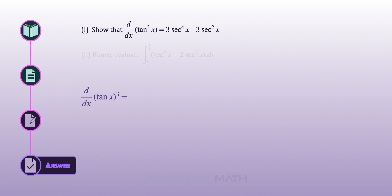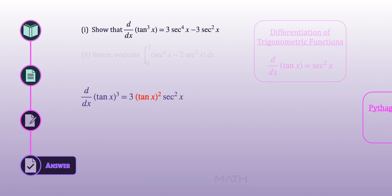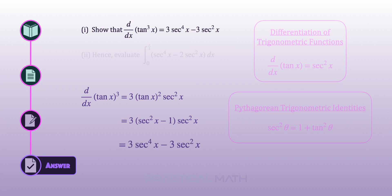To differentiate tangent cubed of x, we apply the chain rule: bring down the power outside the bracket, power minus 1, giving 3 times tangent squared of x, followed by the differentiation of tangent of x. By the differentiation of trigonometric functions, the derivative of tangent of x equals secant squared of x. To convert tangent squared to secant squared, we use the Pythagorean trigonometric identity: secant squared theta equals 1 plus tangent squared theta. Replacing tangent squared x with secant squared x minus 1 and simplifying gives the required result.